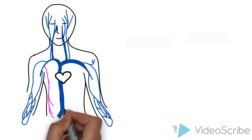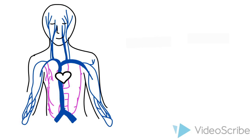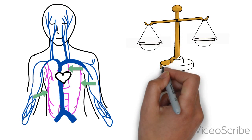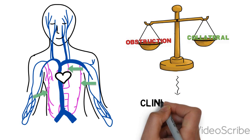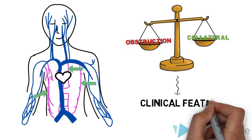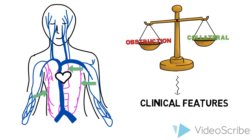When the SVC becomes obstructed, collateral veins start to form, becoming alternate routes for the venous blood to return to the heart. When these collateral veins can no longer compensate for the degree of SVC obstruction, clinical features of SVC syndrome begin to arise. This may also happen relatively early if the SVC obstruction happens quickly before there is time to establish collateral flow. Other times, this is an insidious disease process and can remain asymptomatic for years.